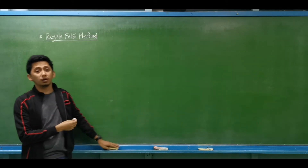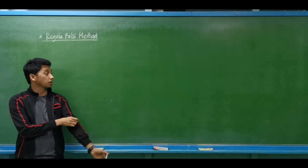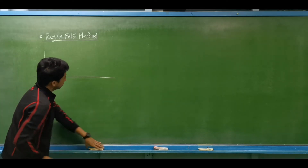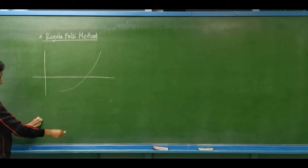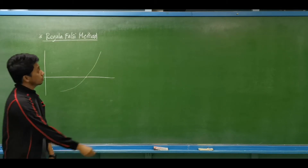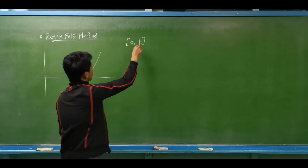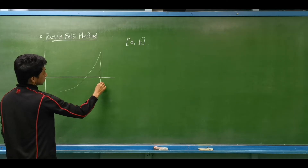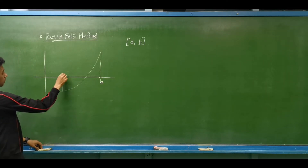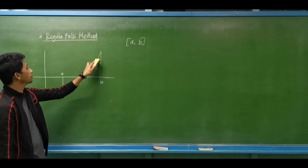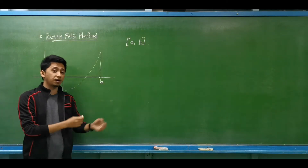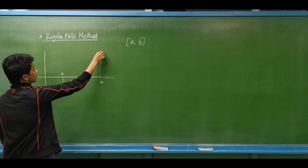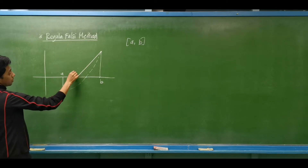Today we discuss the Regula Falsi method, also known as the false position method. This method is similar to the bisection method. We have a function and are required to determine the root, so we introduce an interval within which the root is included. From the bisection method we average the upper and lower limits, but for this method we connect these two points using a straight line and look for the value of X.